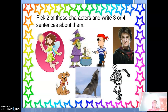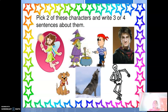Now for a small activity: pick two of these characters and write three to four sentences about them. I have given nearly seven characters here. Pick any two characters and write three or four sentences about them. You can able to write — I know that everybody likes him. Who is he? Tell me afterwards.